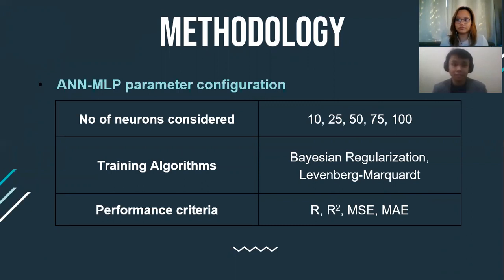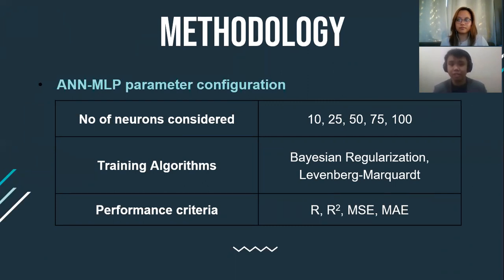For the training conditions, the number of neurons we used are 10, 25, 50, 75, and 100. For the training algorithms, we used Bayesian regularization and the Levenberg-Marquardt. For the performance criteria, we used these to assess the performance of the developed models: R, R-squared, MSE, and MAE. The next part is the feature reduction. After developing multiple ANN models, we assessed the best model performance when a certain variable is reduced in the modeling process.